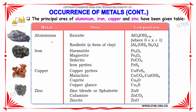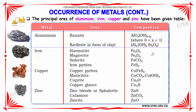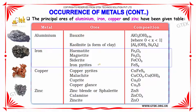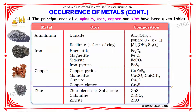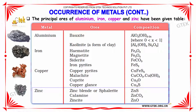Here are some of the principal ores of the metals aluminum, iron, copper, and zinc. For aluminum: bauxite and kaolinite. For iron: hematite, magnetite, siderite, and iron pyrites. For copper: copper pyrites, malachite, cuprite, and copper glance. For zinc: zinc blende, calamine, and zincite.